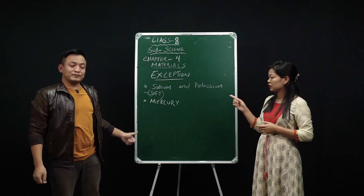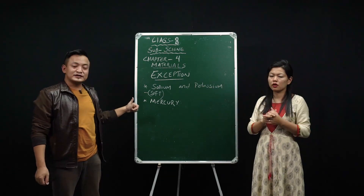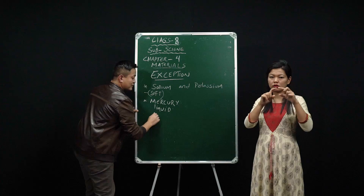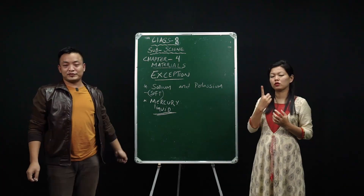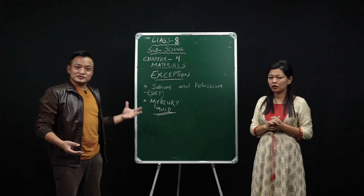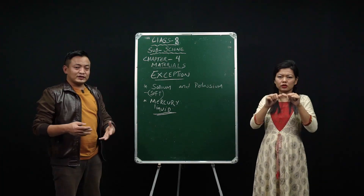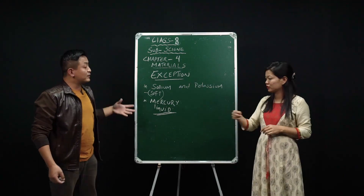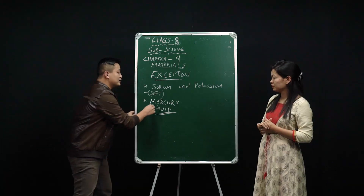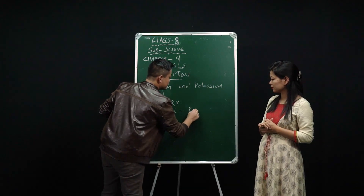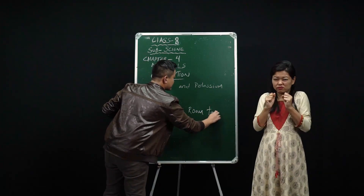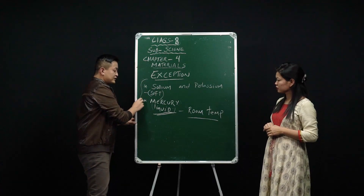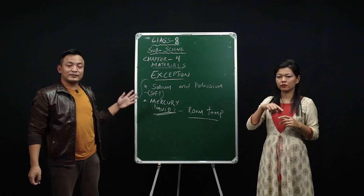Mercury is a metal, but the exception here is that mercury is the only metal found in a liquid state at room temperature. So far we know metals are solid, but mercury, though it is a metal, is found in liquid state at room temperature.